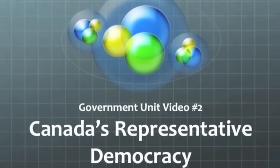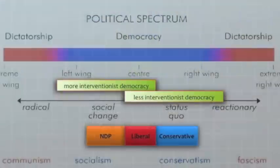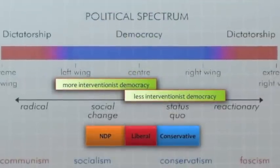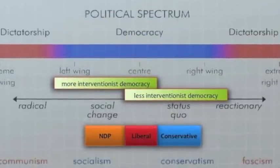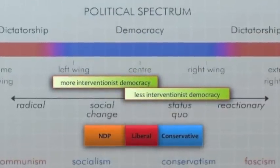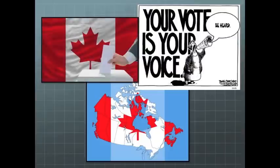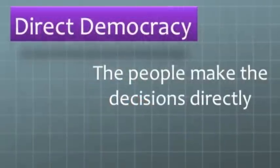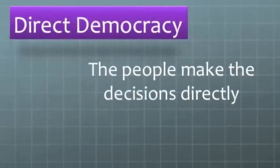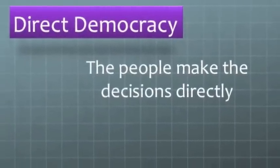In the previous video we talked about the different ways to organize a government based on the ideology of that society. Canada is a democracy — the people rule. Democracy requires that each person has a voice, and that each voter is treated equally by only having one vote. A direct democracy literally has the majority rule.